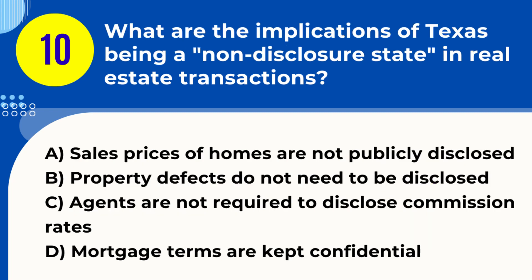Question 10. What are the implications of Texas being a non-disclosure state in real estate transactions? A. Sales prices of homes are not publicly disclosed. B. Property defects do not need to be disclosed. C. Agents are not required to disclose commission rates. D. Mortgage terms are kept confidential. Answer: A. Sales prices of homes are not publicly disclosed. Explanation: In Texas, being a non-disclosure state means the sales price of homes is not required to be publicly disclosed or recorded.